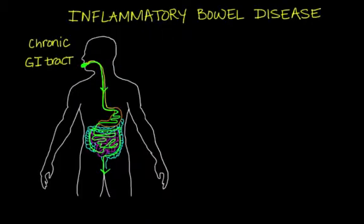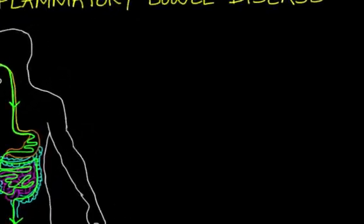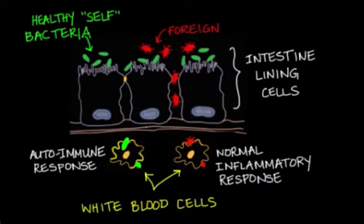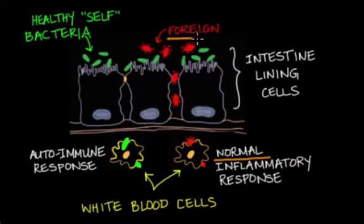The two most common inflammatory bowel diseases are Crohn's disease and ulcerative colitis, or UC. The trigger for both these diseases is traced back to autoimmunity, which means that the immune system attacks its own body. In a normal immune response, this natural system of defense is supposed to attack foreign cells and substances, not the body's own cells.